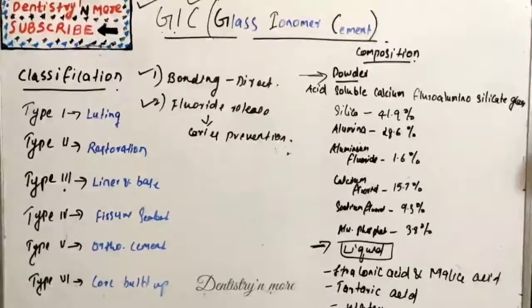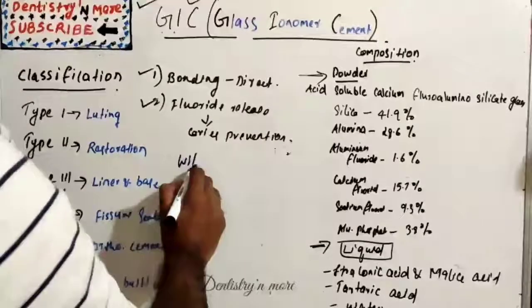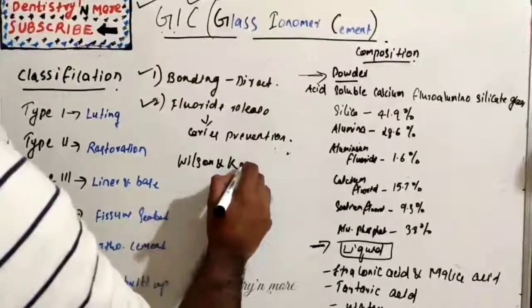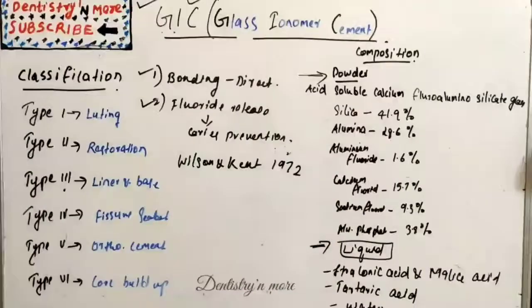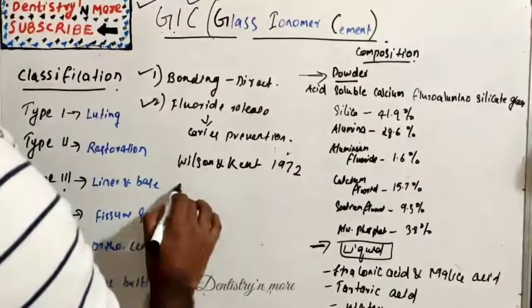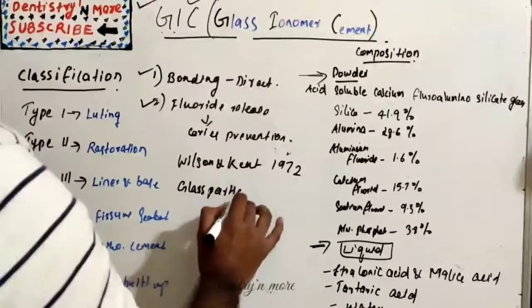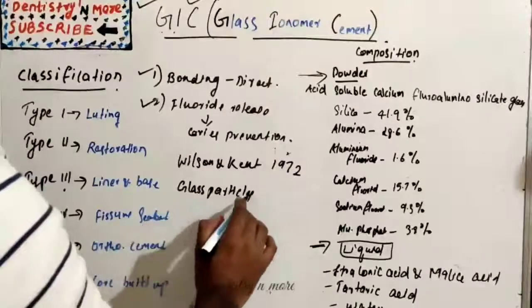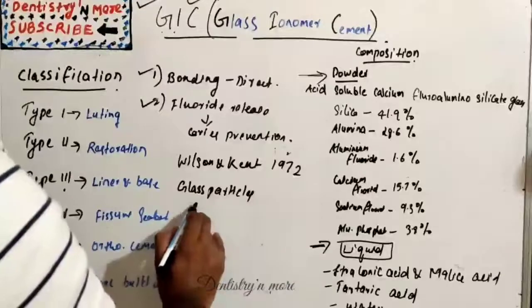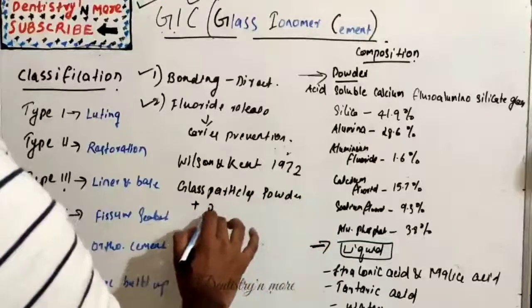Glass Ionomer Cement is a tooth-colored material introduced by Wilson and Kent in 1972. The material was based on the reaction between two things: one is glass particles, that is silica or silicate glass particles, and that is a powder, and polyacrylic acid.